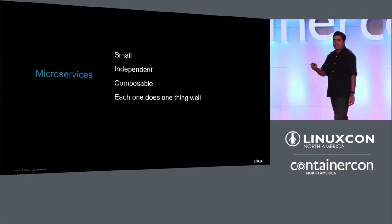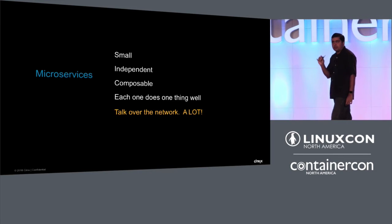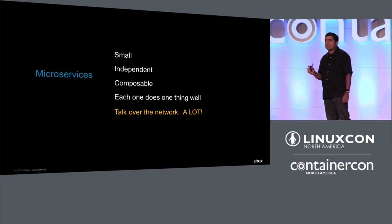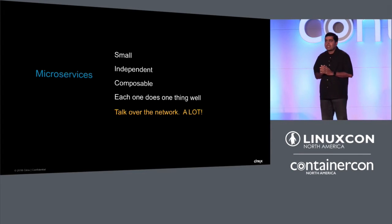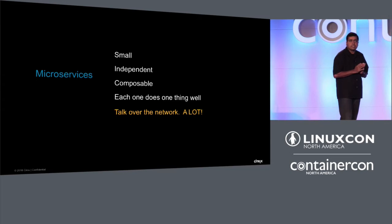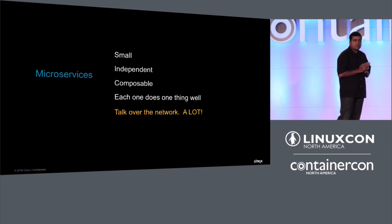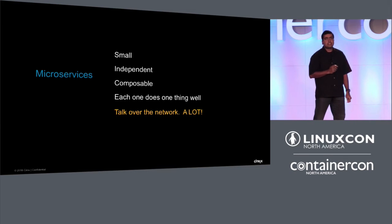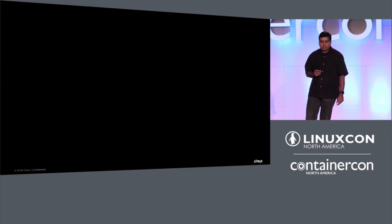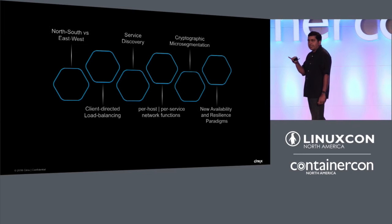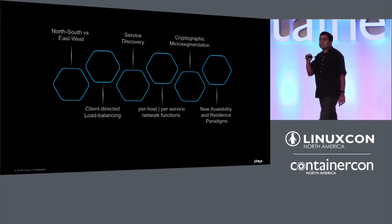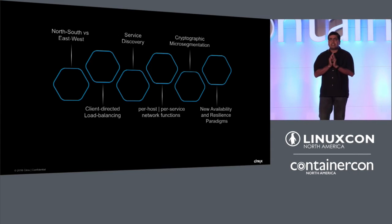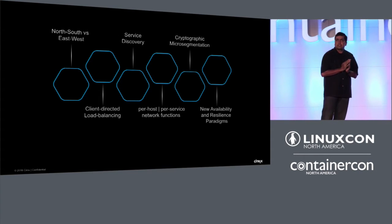As someone in networking, what I like about all of this is that all of these different microservices talk over the network. That decoupling is effected by making these services communicate with each other over the network, and that's where the requirements from a networking perspective come up. If you look at it at the thousand-foot level where rubber meets the road, there are six key things that are different about networking and microservices.